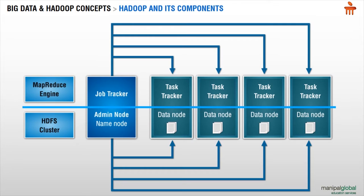The admin node typically runs two daemons: one is the Job Tracker and the other is the Name Node. The Name Node directly correlates to the HDFS part — it manages everything with respect to storing, managing, and accessing the big data files. The Job Tracker is more about managing the MapReduce algorithm implementation. They both run at the admin node level and they are both daemons.